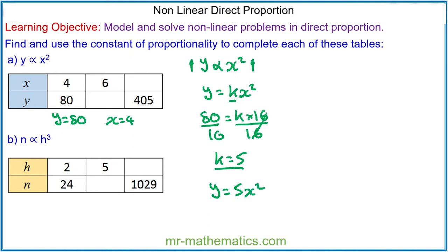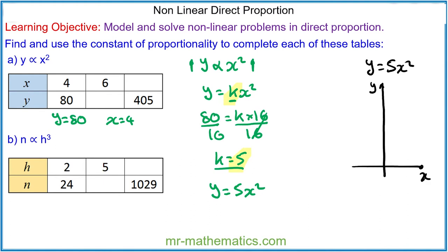I have substituted in this value of k into the equation. We can model this relationship graphically, where we have the y values and the x values, and the model will look like a smooth parabola with equation y is equal to 5x squared.